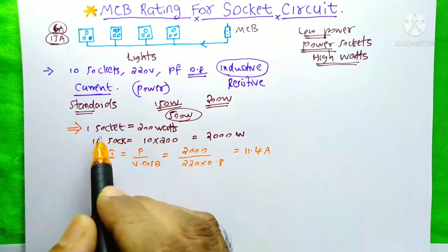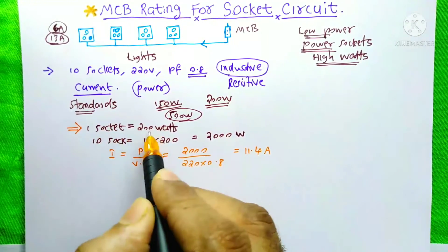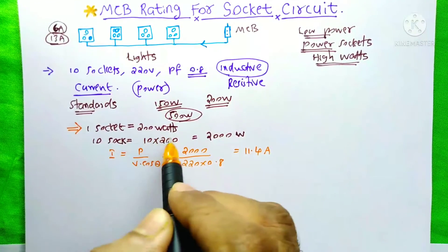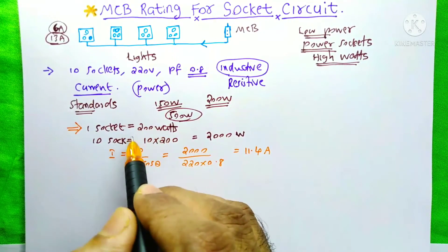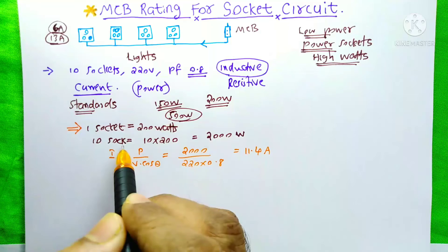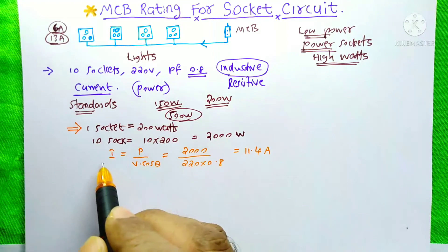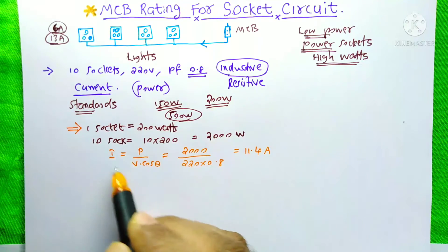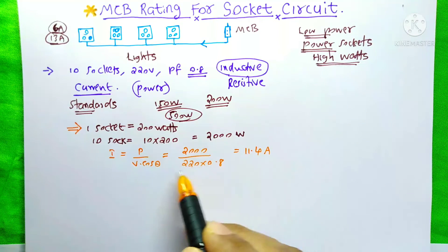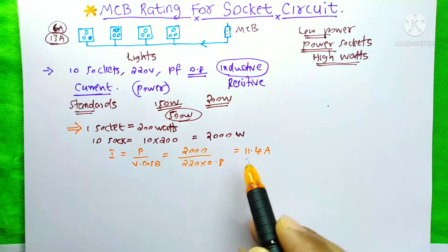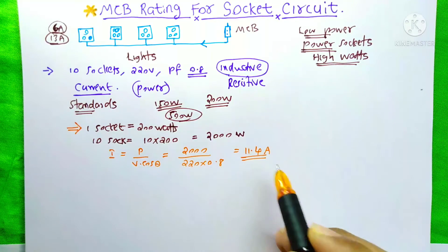On our calculation, I just assumed one socket power is 200 watts. Means you could connect an equipment of 200 watts. So for 10 sockets, 10 into 200 watts that is 2000 watts. So we need to calculate the current. It is the normal power equation. So I put everything on this equation. So the answer is 11.4 amps.